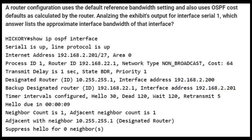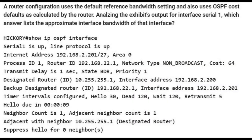Here's the last question. A router configuration uses the default reference bandwidth setting and also uses OSPF cost defaults as calculated by the router. Analyzing the exhibit's output for interface Serial 1, which answer reflects the approximate interface bandwidth of that interface? It shows a kind of network information after you type the command 'show IP OSPF interface.' You can see Serial 1 is up, line protocol is up.